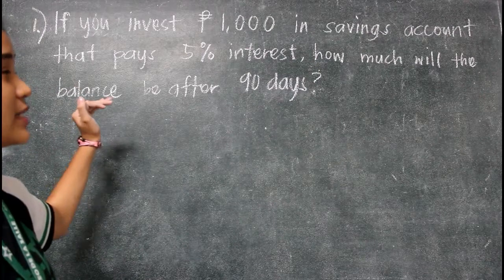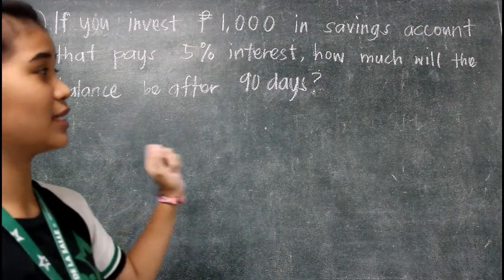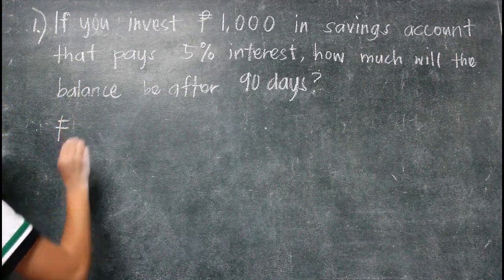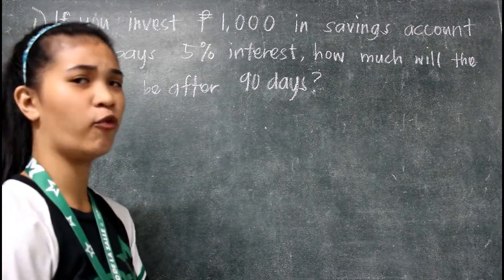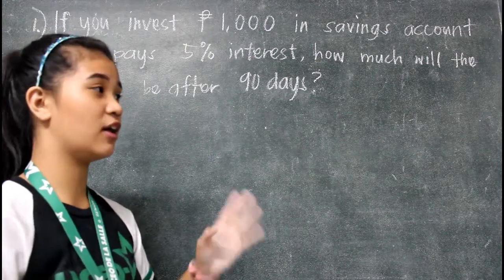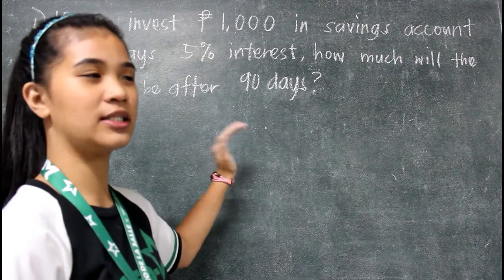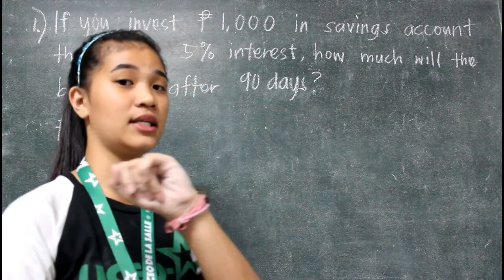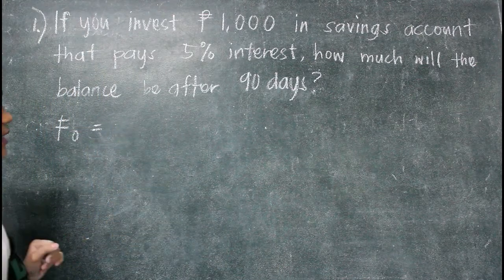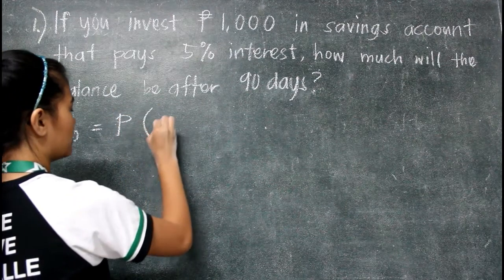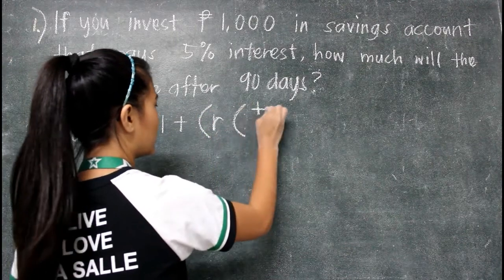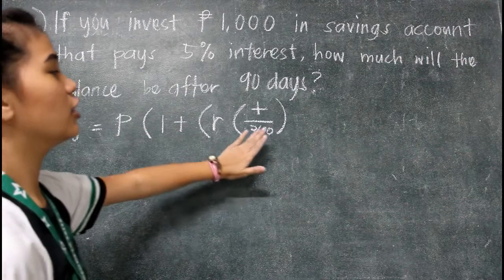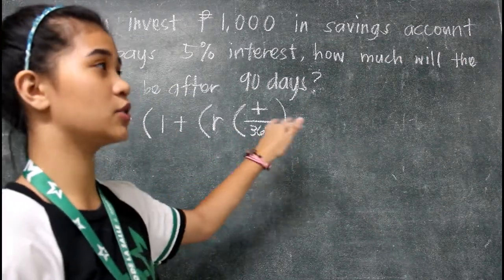Now we'll have a problem. If you invest 1,000 pesos in a savings account that pays 5% interest, how much will the balance be after 90 days? Here we're going to find the future value. There's no given specifying exact or ordinary interest, so always remember that the default is ordinary interest — that is, over 360 days. So this would be the future value of ordinary interest, with the formula P times 1 plus R times T over 360.